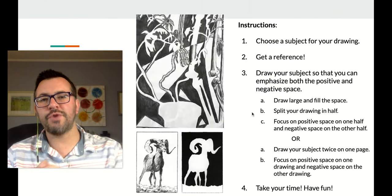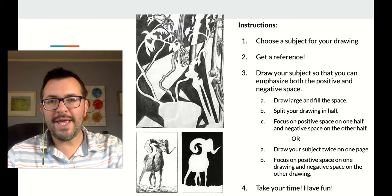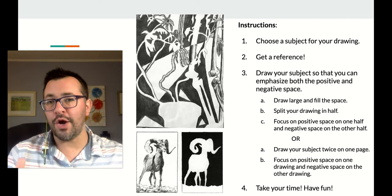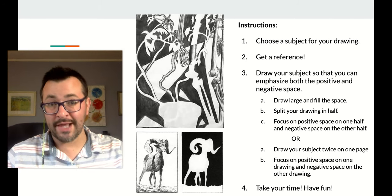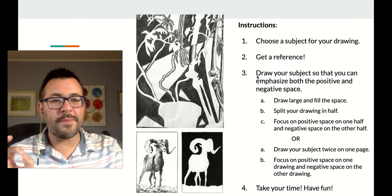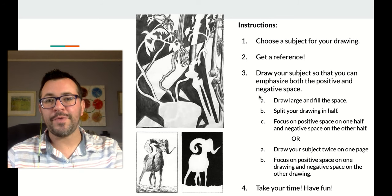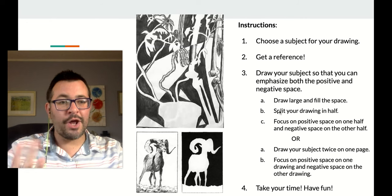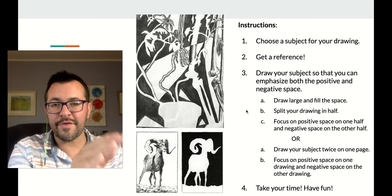Here are your instructions. You're going to choose a subject for your drawing — any subject that you want. Make sure you get a reference: either look at that subject in real life, have it in front of you, or find a photo of that subject. So if you want to draw an animal like an elephant and you don't happen to own one, Google is a great way to find a really great image. Now draw your subjects emphasizing both the positive space and the negative space. Option one: draw the image once, draw it large, split your drawing, and on one half emphasize the positive space with details, and on the other half fill in the negative space and leave your subject blank.